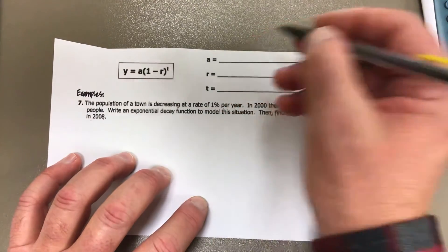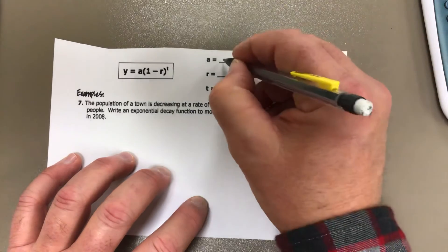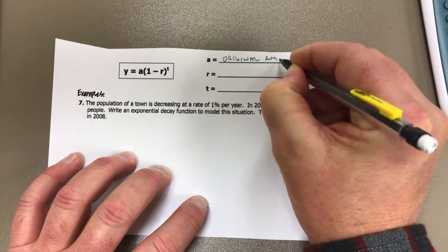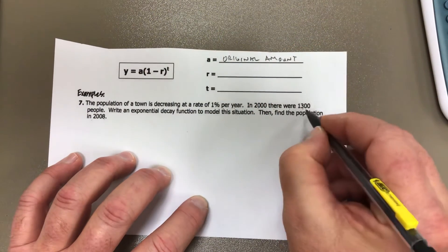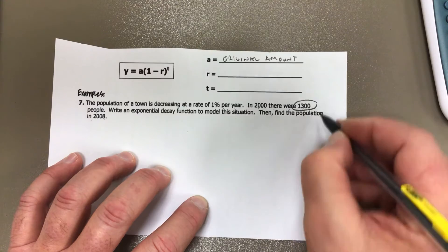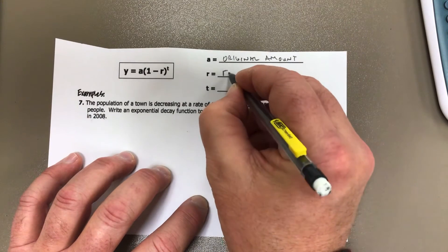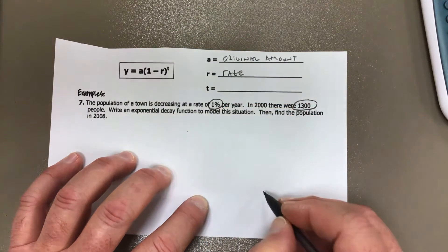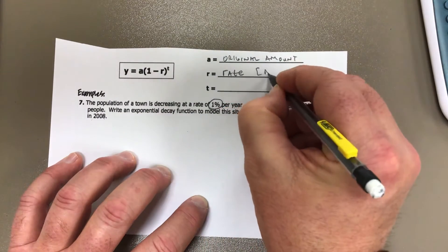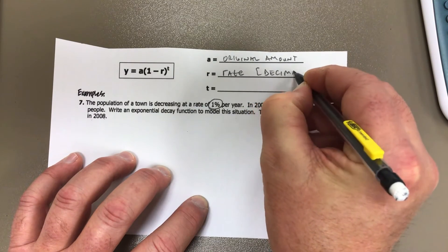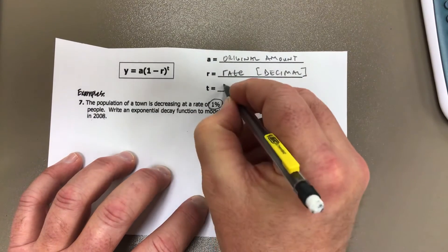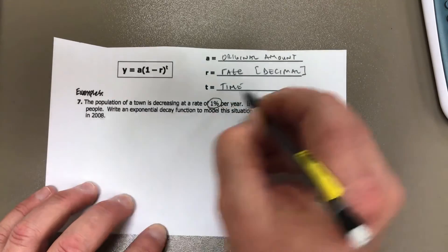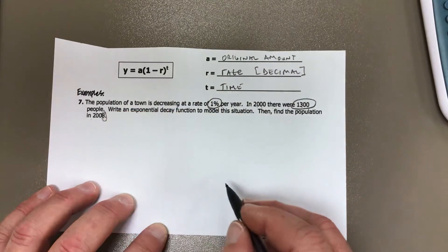So they're going to make us work a little bit here. Remember that the a is the original amount, the one that we start with. So that looks like it's the 1,300. That's the a. The r is the rate. The rate is 1%, and we have to change that to a decimal. And then the t is for time. That looks like we have to go from 2000 to 2008, so that looks like it's eight years.